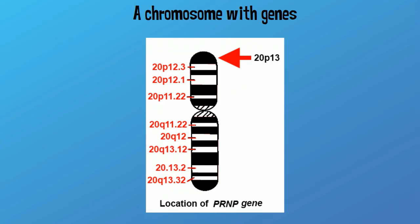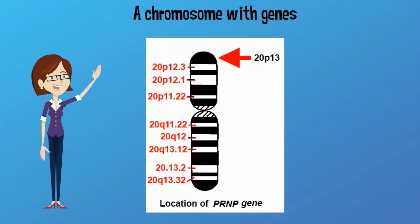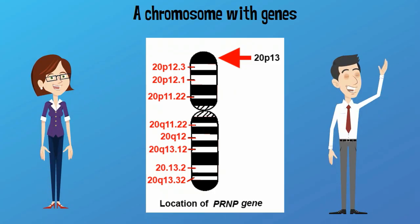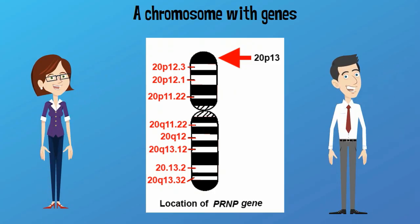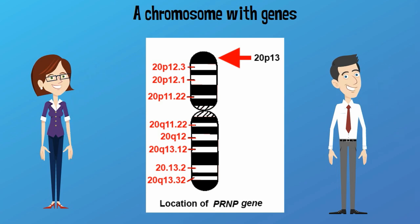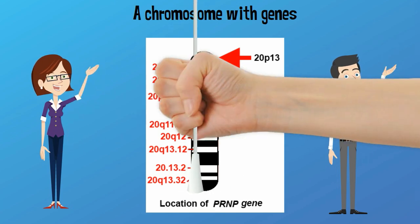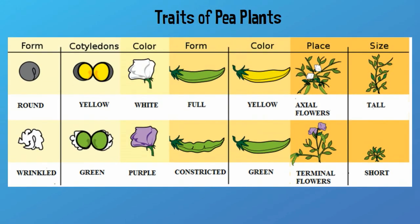For each trait, you get half of the information from mom and half from dad. As a result, you get different forms of the same trait. These different forms are alleles.